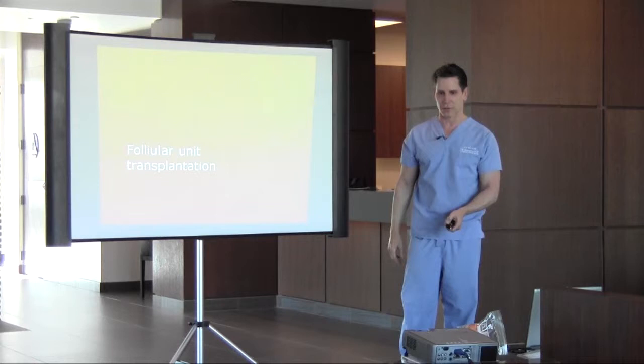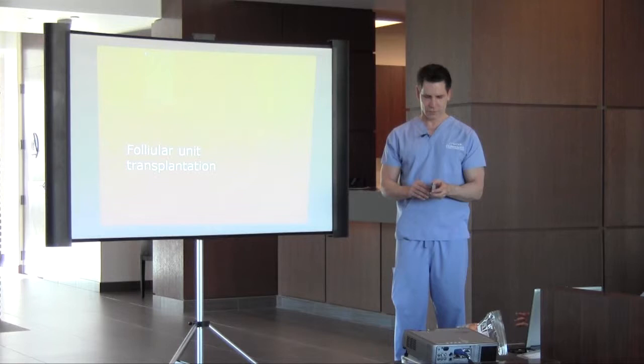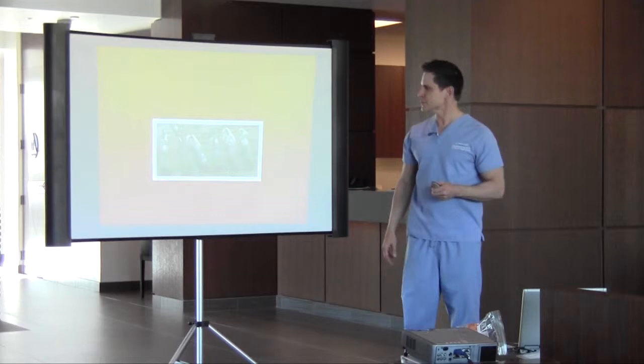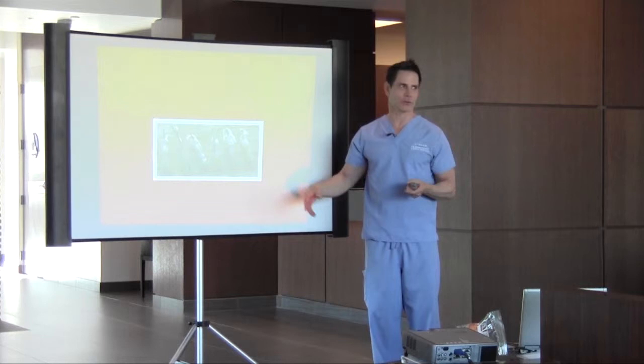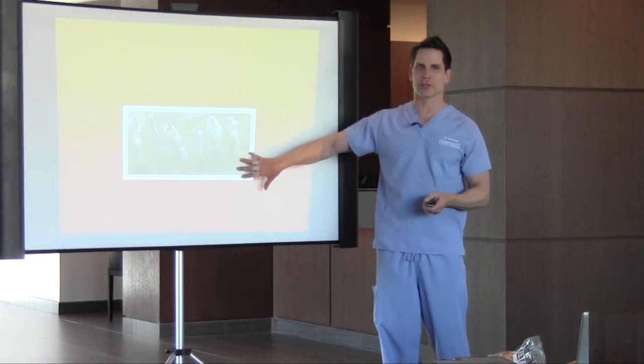So what is a follicular unit? Our hairs grow in bundles — they can either come as a single hair or as multiple hairs. You can have twos, threes, and sometimes you'll have clusters of fours or fives. This grouping is called a follicular unit.